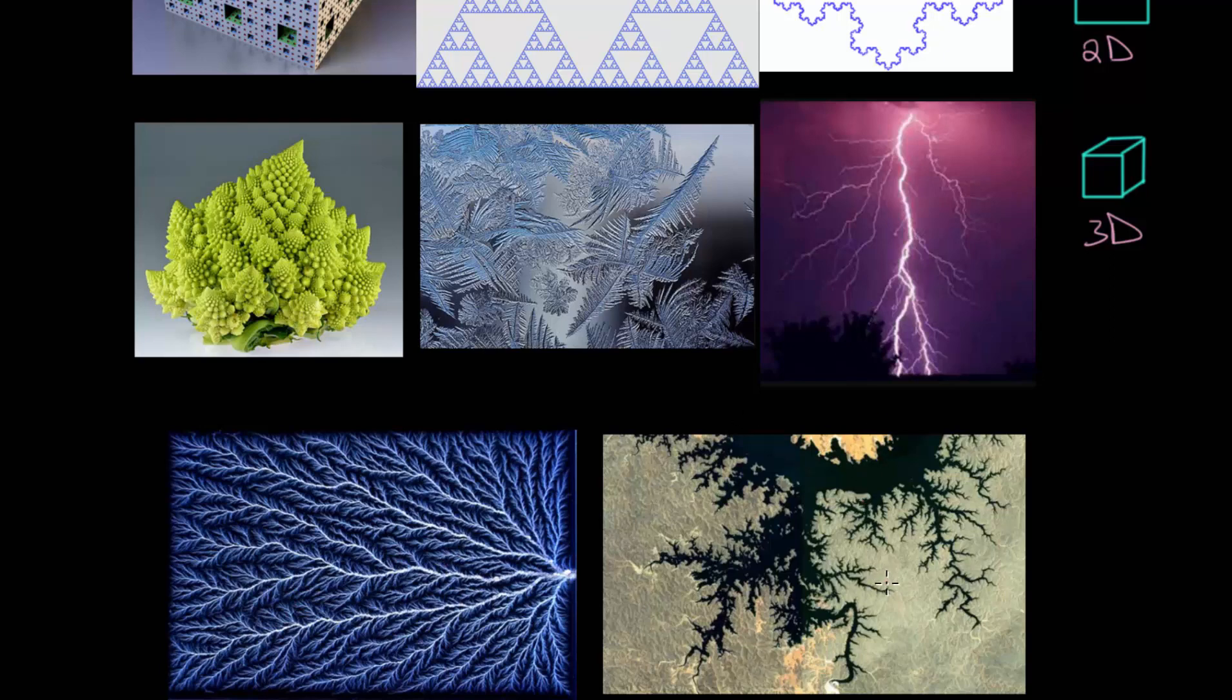This right here is a picture of a river system from some type of satellite image. And you can see, again, this different branching pattern.